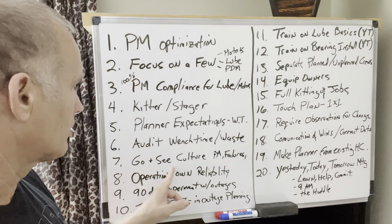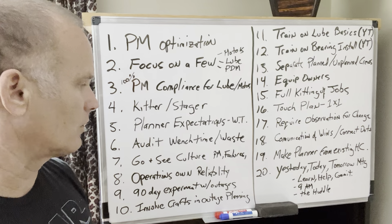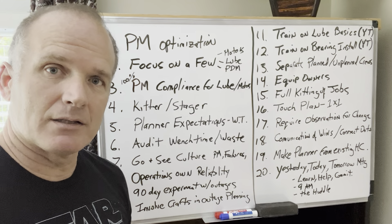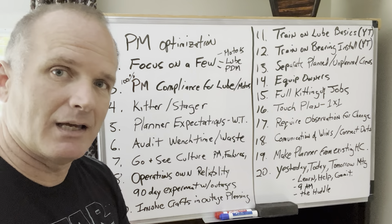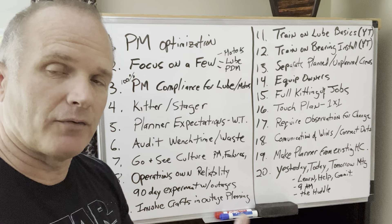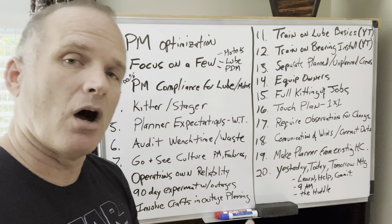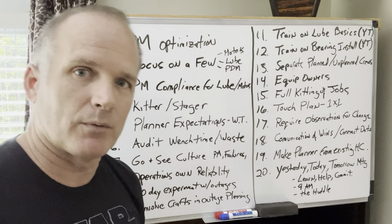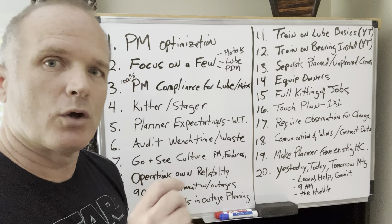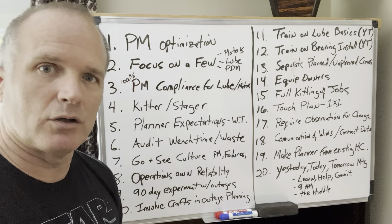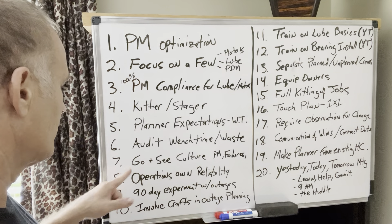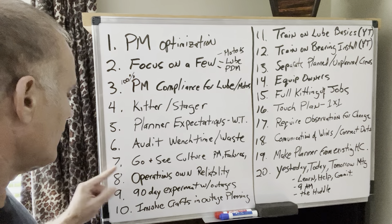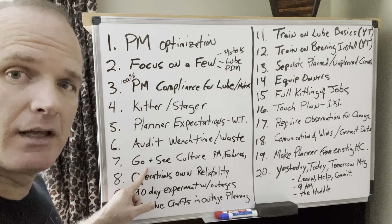Number seven: create a go-and-see culture. Do you go and see some of your PMs? Do you go and see your failures? Or do you just talk about them in the conference room? Go and see. Talk to the people. See the physical evidence. This is a huge one — it changes the game, actually.